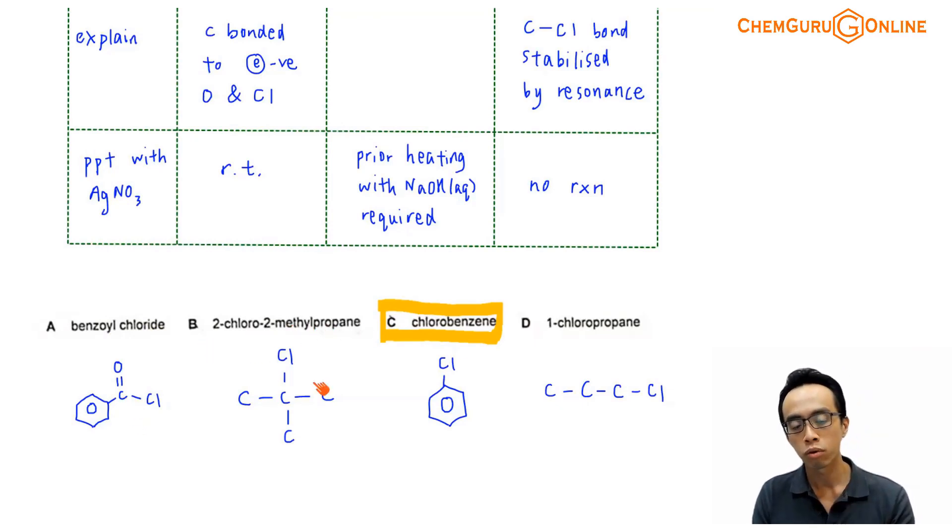Option B, 2-chloro-2-methylpropane, this is chloroalkane. Then option C, chlorobenzene, obviously this is my chlorobenzene, this is the most stable, least reactive. D, 1-chloropropane, this is also a halogenoalkane, chloroalkane. So if I compare options A, B, C, D, obviously C, my chlorobenzene, it is the most stable. This is the least reactive, and this is our answer for this question.